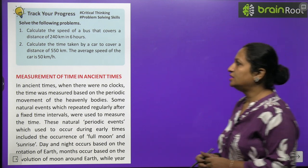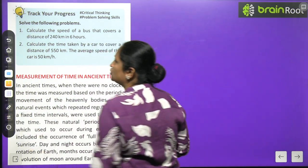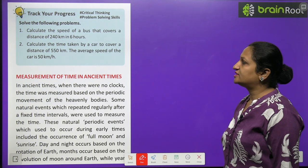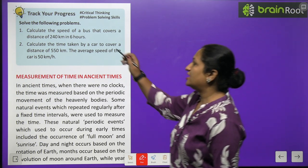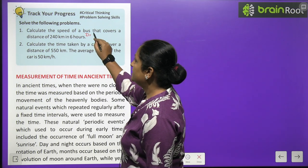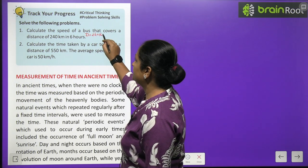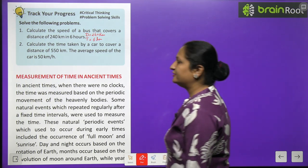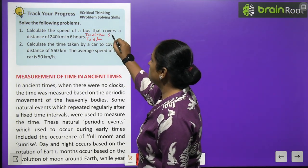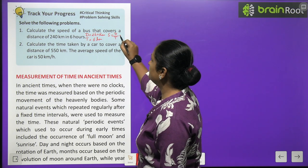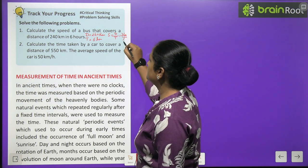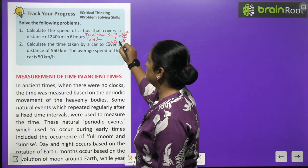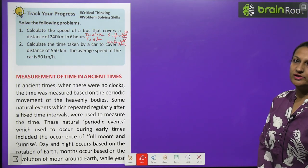Now, track your progress — let's solve some numericals. Calculate the speed of a bus that covers a distance of 240 km in 6 hours. Here, distance is 240 km and time is 6 hours. Speed equals distance divided by time, so 240 divided by 6 gives a speed of 40 km per hour.